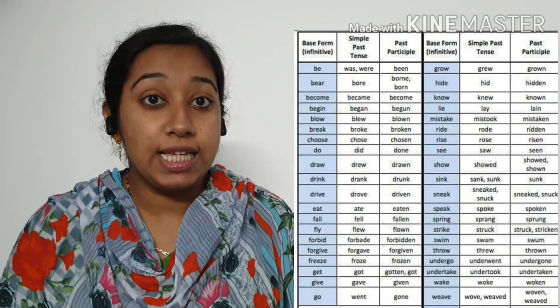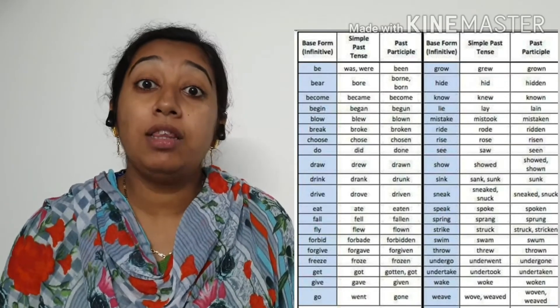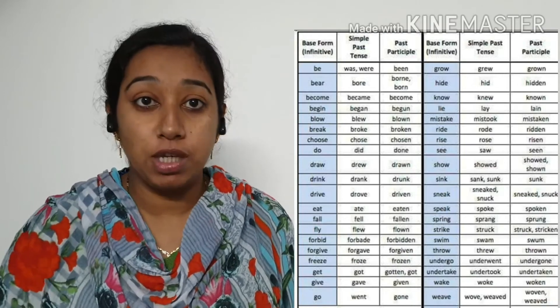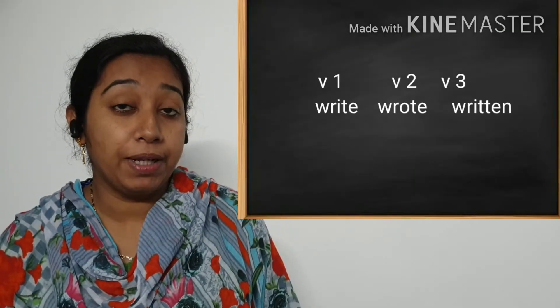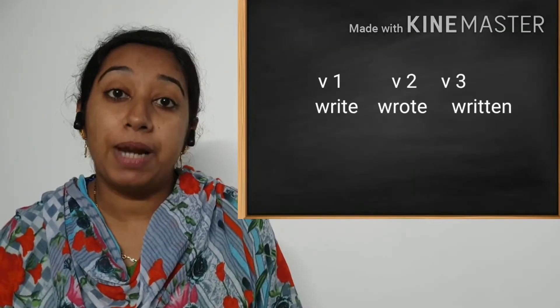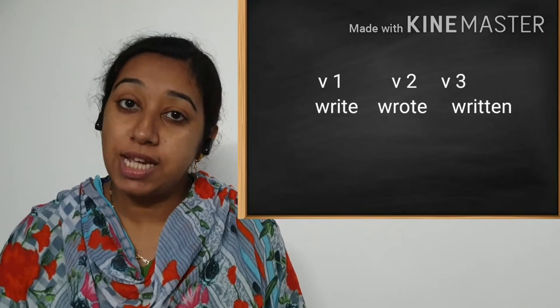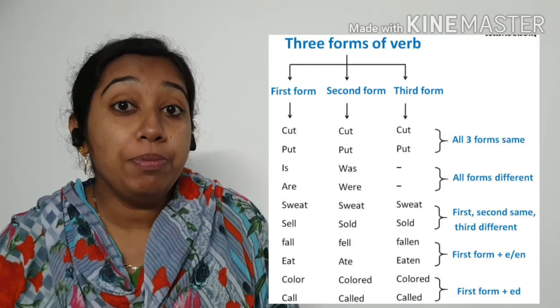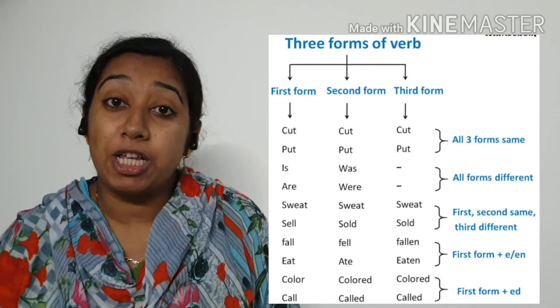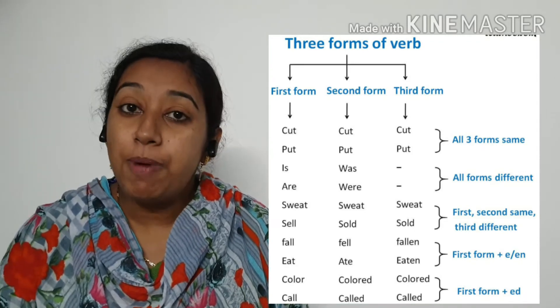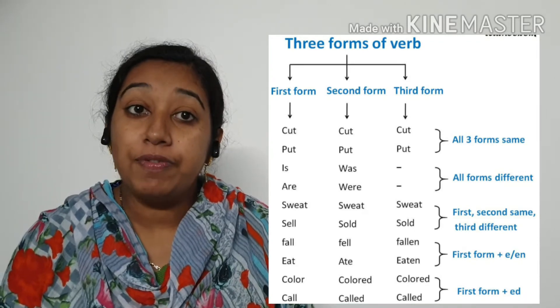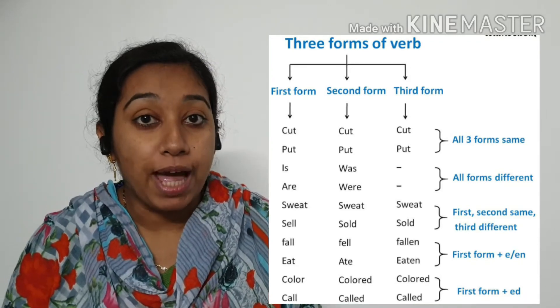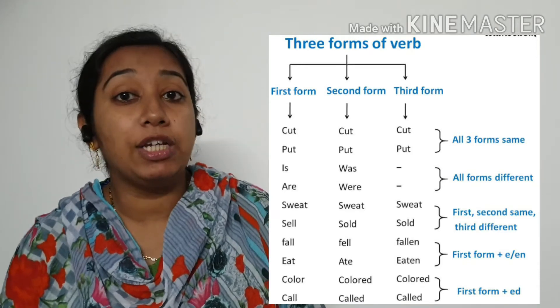If we want to form the tenses, there are three verb forms used: verb 1 (present tense), verb 2 (past tense), and verb 3 (past participle). What do you mean by a past participle? The past participle is formed by adding 'ed' or 'en' to the main form of the verb.